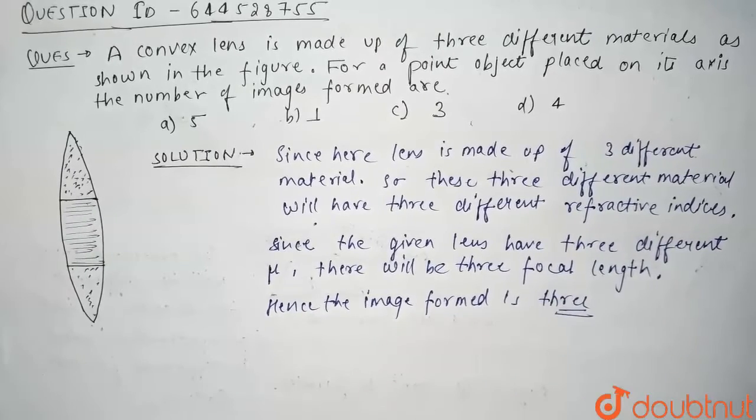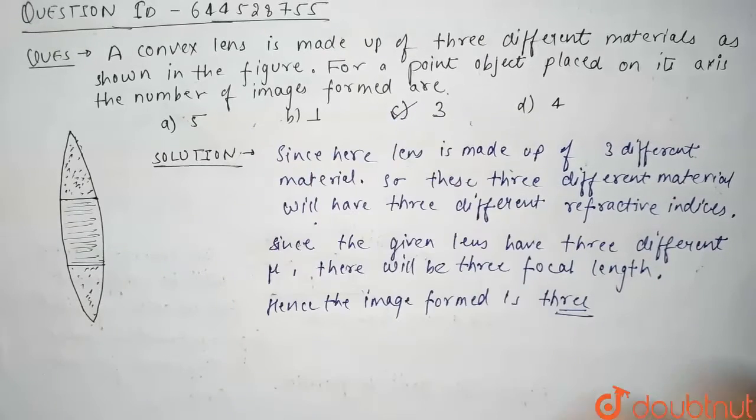So for a point object placed on its axis, the number of images formed is three because there will be three focal lengths. So correct option is option three. Thank you guys.